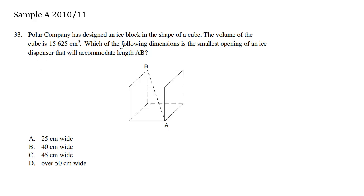Polar Company has designed an ice block in the shape of a cube. The volume of the cube is 15,625 cm³. Which of the following dimensions is the smallest opening of an ice dispenser that will accommodate length AB?